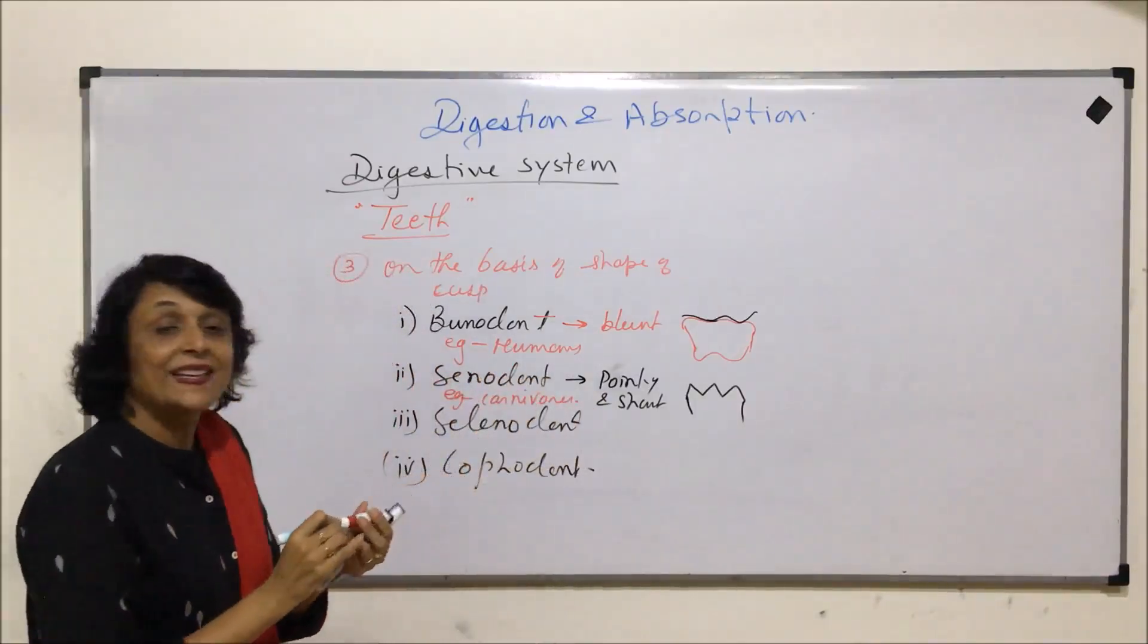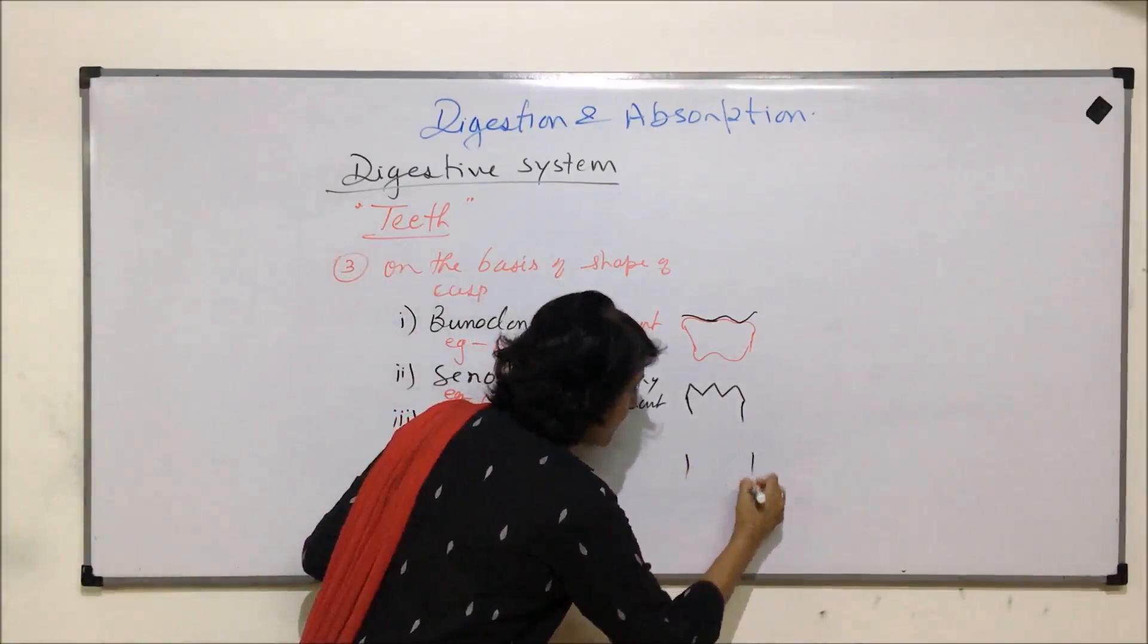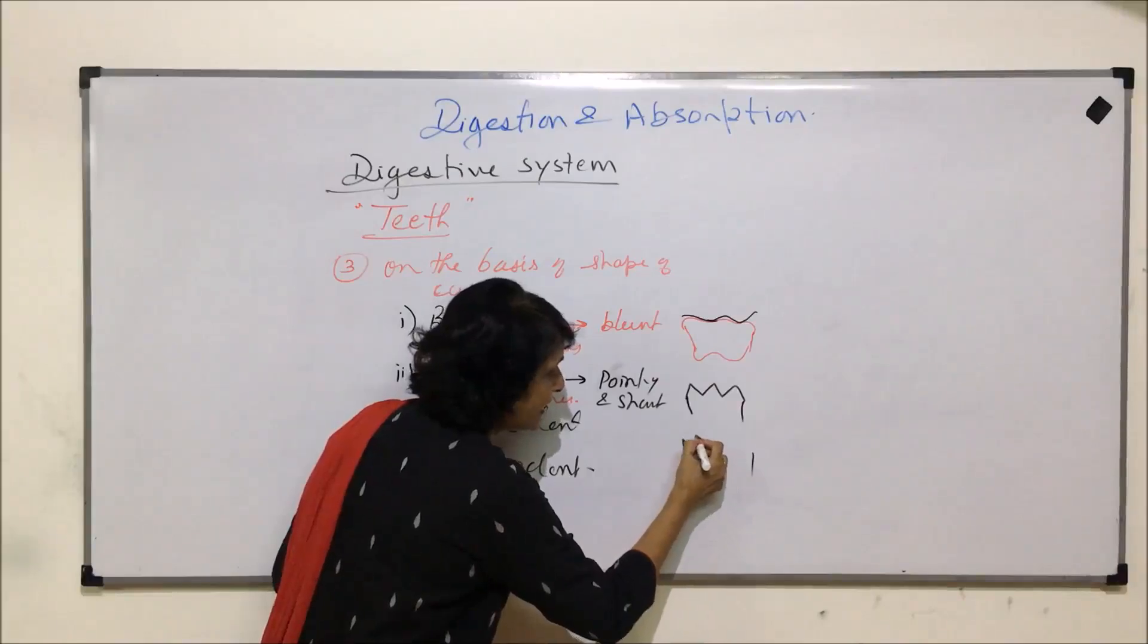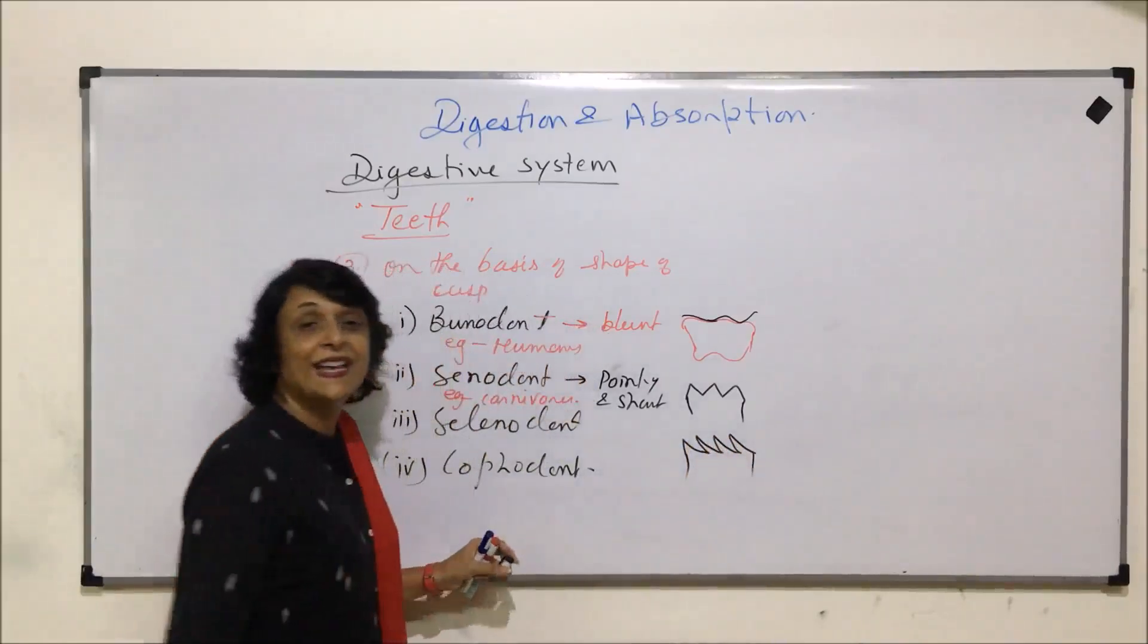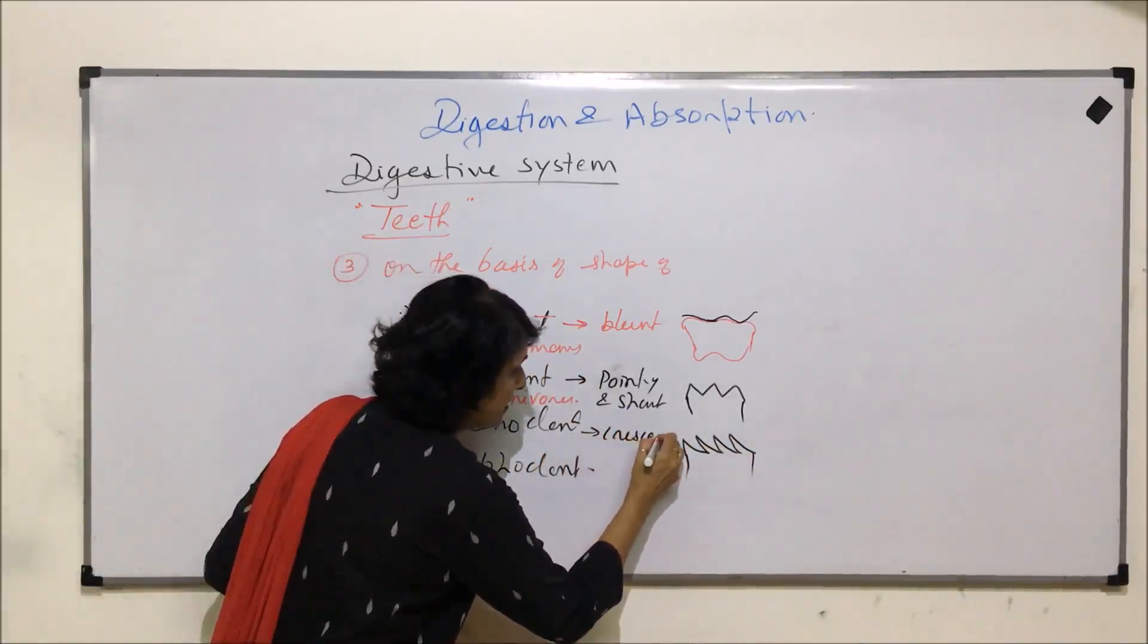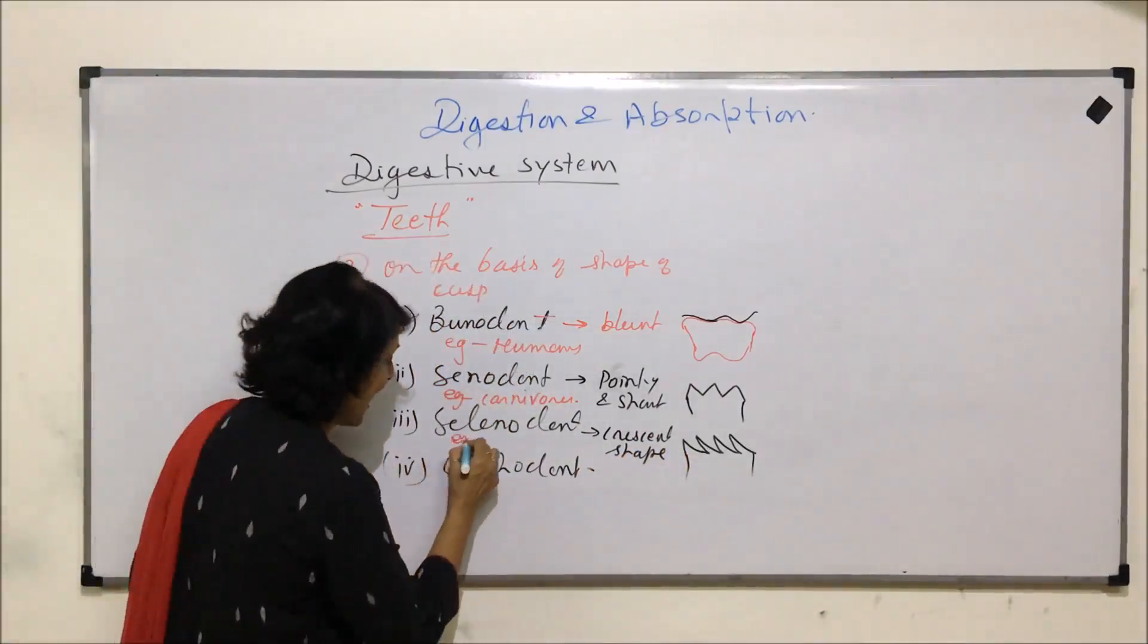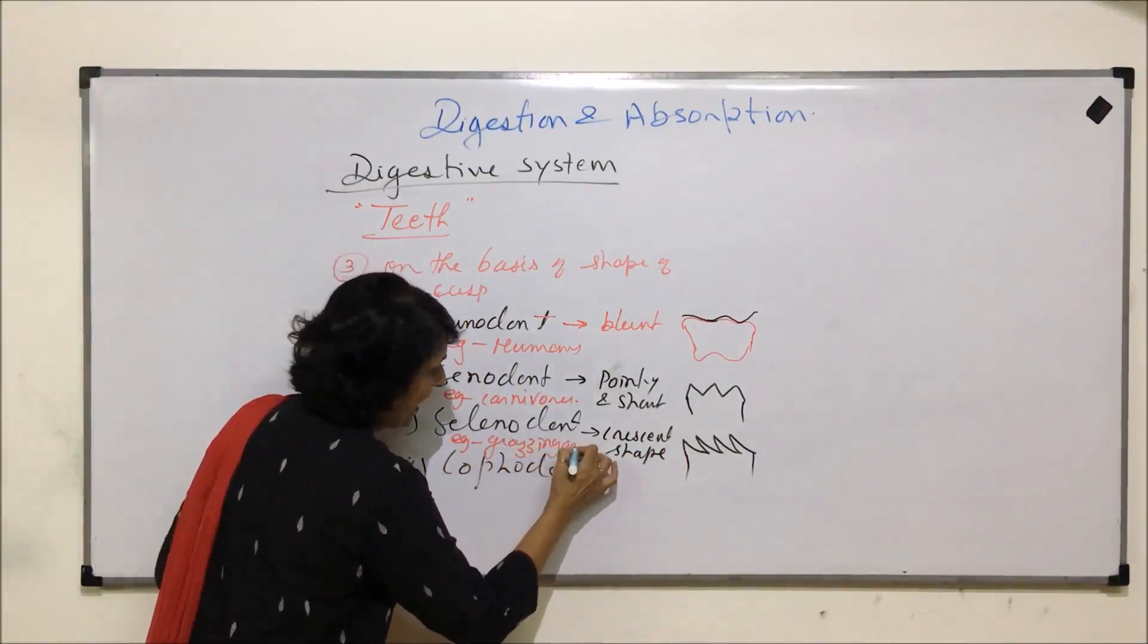Selenodont, the teeth or the cusps are crescent shaped. That means if this is the surface, upper surface of tooth, then the cusp has this kind of half moon like shape. That is crescent shape, half moon like. And this is found in grazing animals.